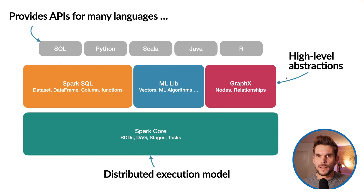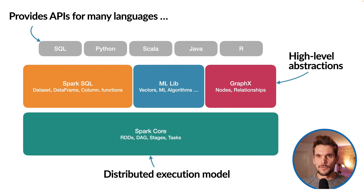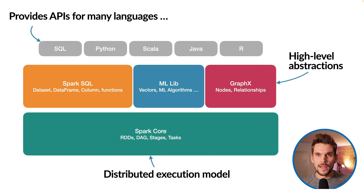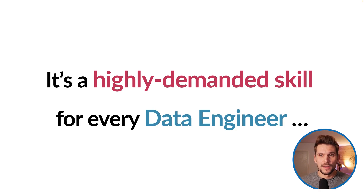In between, we have multiple higher-level abstractions. On the left side, we see Spark SQL, which provides an SQL-like declarative API for data analytics use cases. There's also a machine learning library which implements many machine learning algorithms. And there's also GraphX, which is an abstraction for graph-like data. To wrap this up, Spark is an incredible piece of engineering which can execute analytics workloads we specify in a program, distributed on an entire cluster.